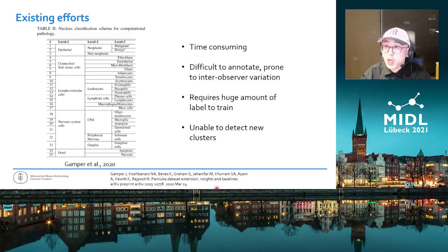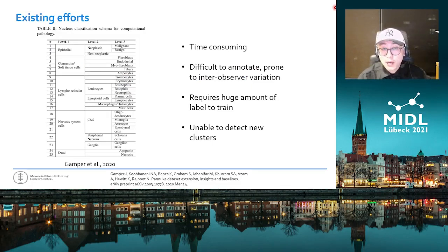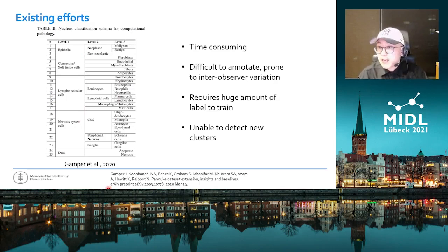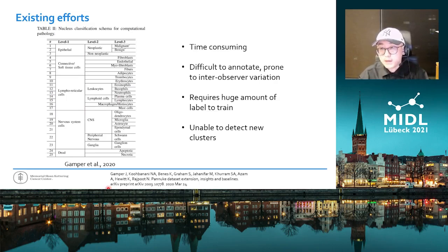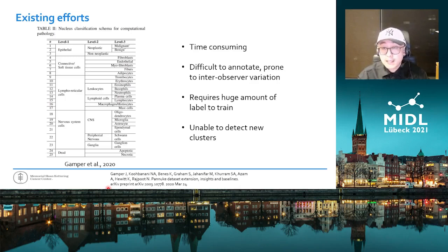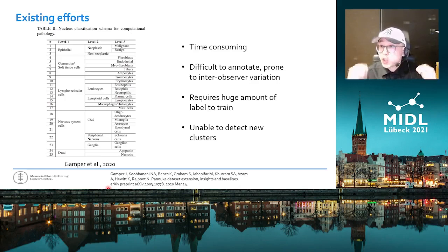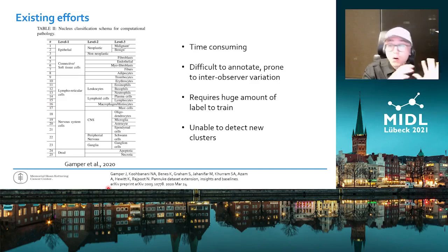Some have proposed a supervised approach to conduct fine-grained classification of nuclei. For example, in this work by Gamper et al., which introduced the pan-nuclei dataset, such a scheme was proposed to collect annotations of fine-grained classification of nuclei from pathologists. We argue that such a scheme could have many drawbacks. For example, it is often very time-consuming and difficult to annotate all these nuclei into fine-grained classes. It might be prone to inter-observer variations, and the model would require a huge amount of labels to obtain reasonable accuracy. In addition, it may also be unable to detect potentially new clusters or groups of nuclei that share morphological similarities that were previously unknown or not well characterized.